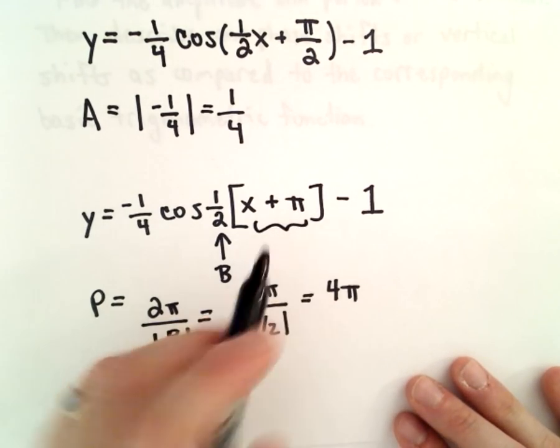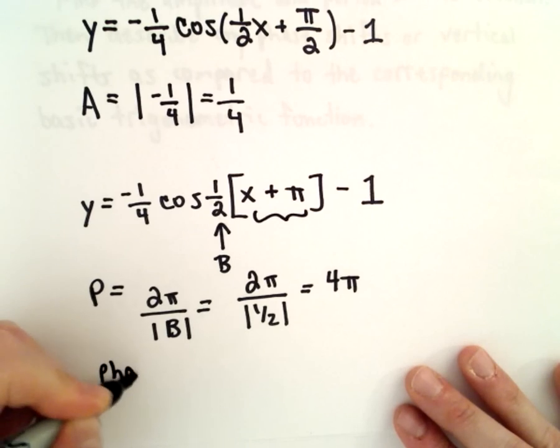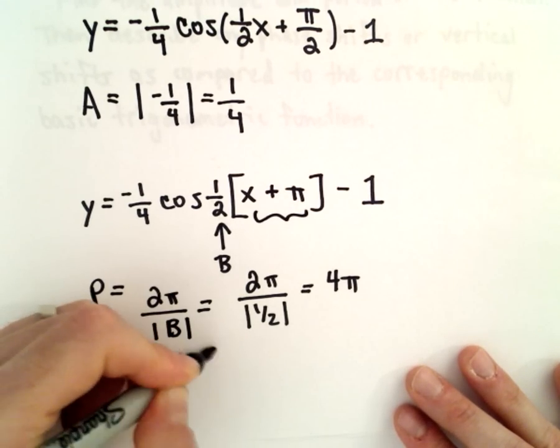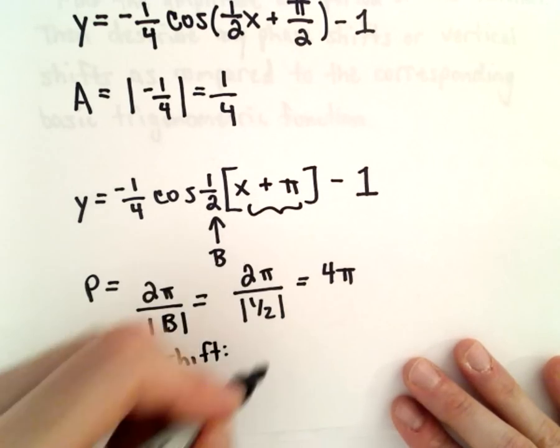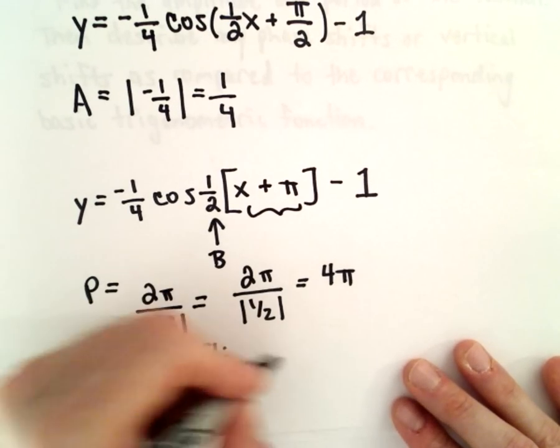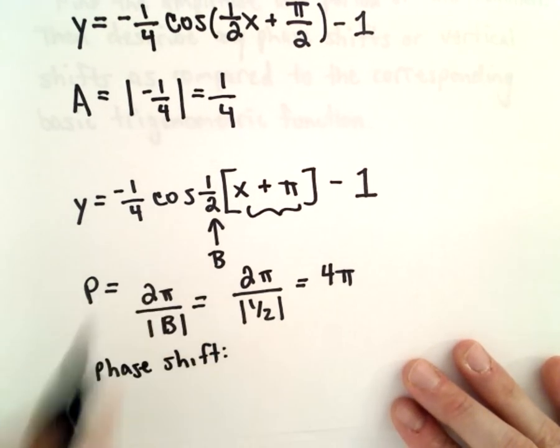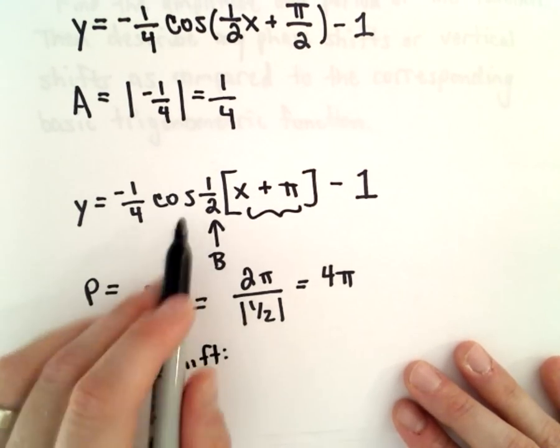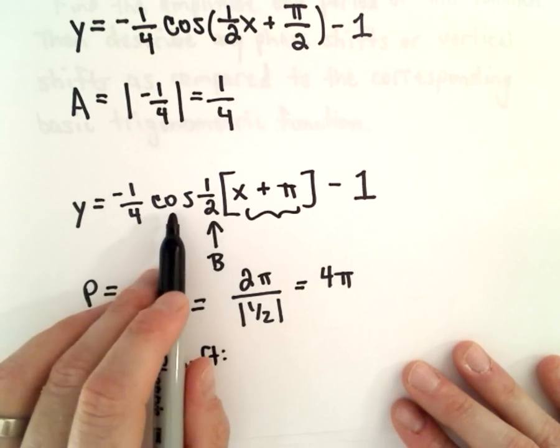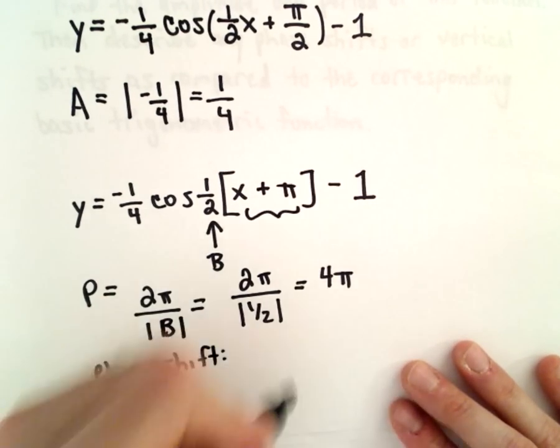So in this case, we have x plus pi. That means if we compare it to the graph of just cosine, well, really we should be actually comparing it to cosine of one-half x.